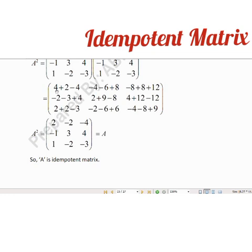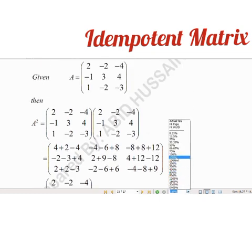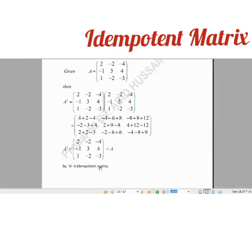So we get the result: 2, minus 2, minus 4, minus 1, 3, 4, 1, minus 2, and minus 3. You see that we have our original matrix A — that is 2, minus 2, minus 4, minus 1, 3, 4, 1, minus 2, minus 3 — which is equal to matrix A. Each corresponding entry is also equal to the resulting matrix A squared. So we have A squared is equal to A, and therefore matrix A is an idempotent matrix.